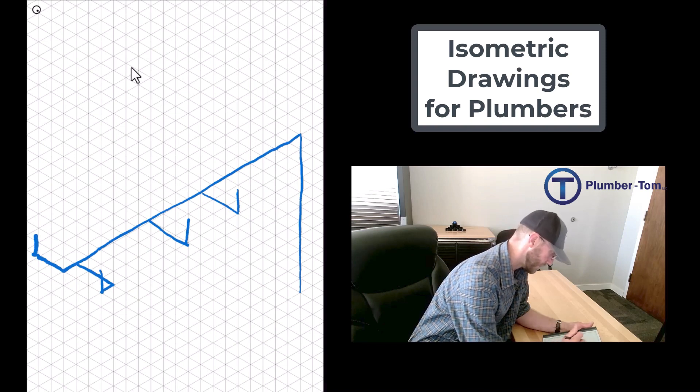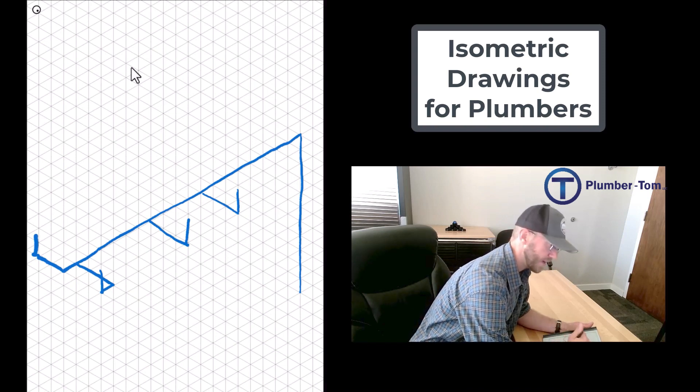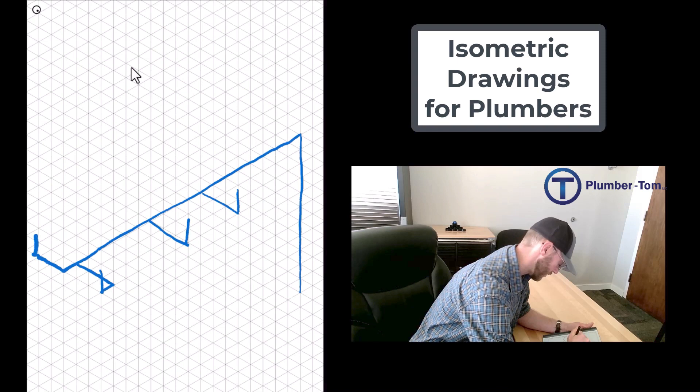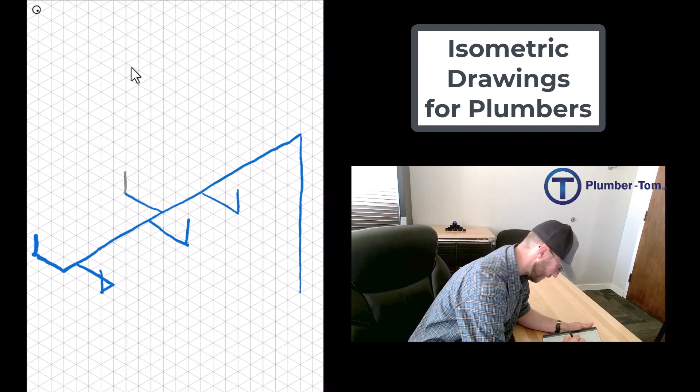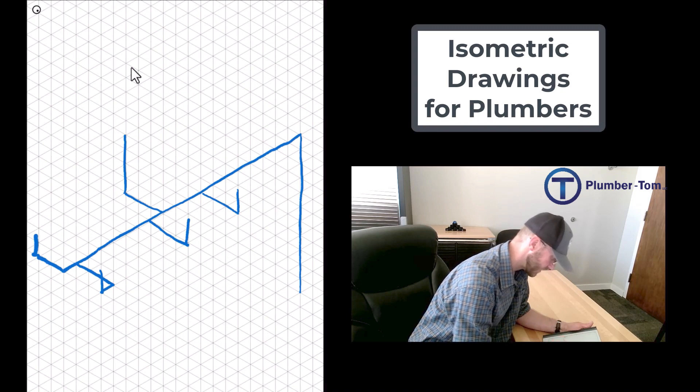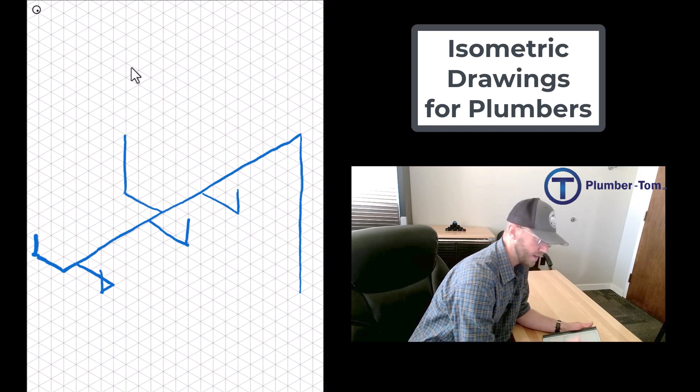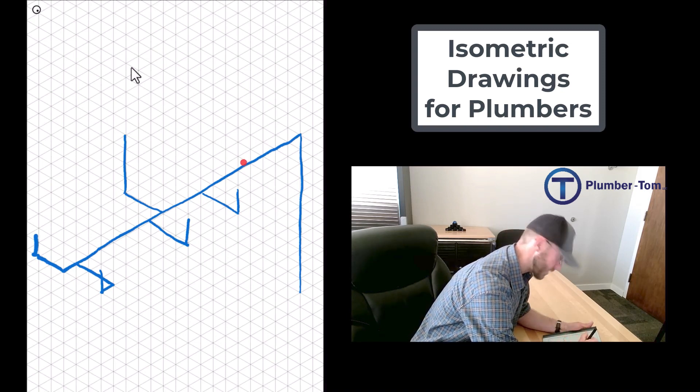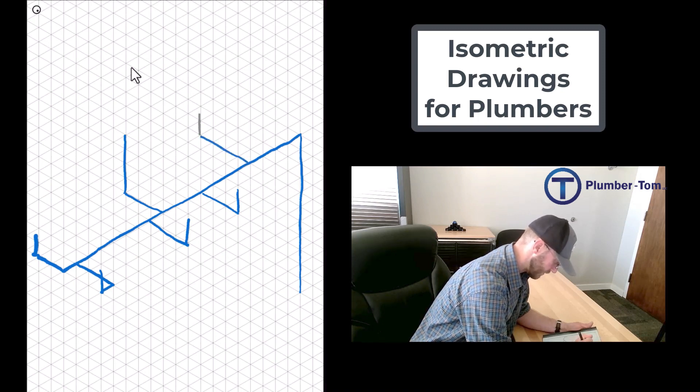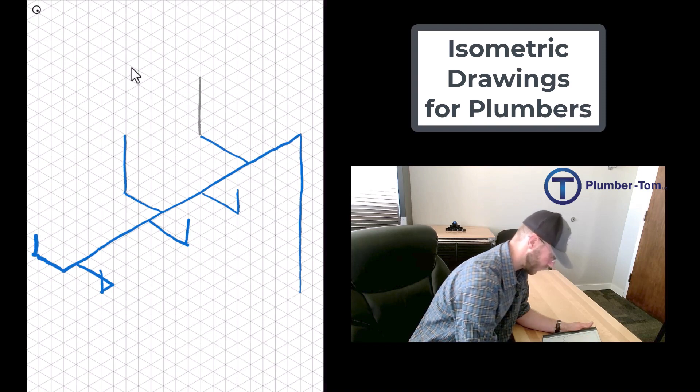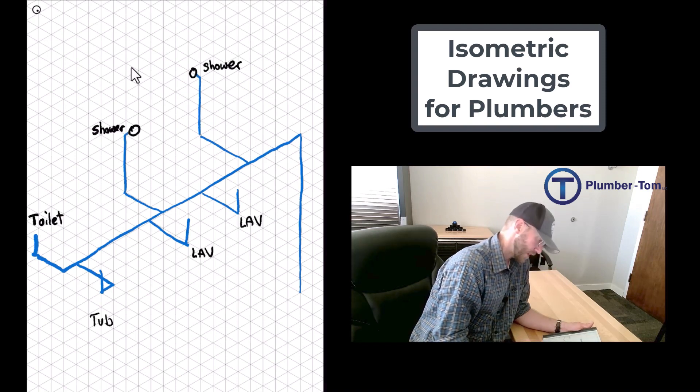Then I need to branch off and come over for the shower. Now again, going from the inside of the shower, my cold needs to be on the right side. I'm going to come up about four feet, trying to scale this a little bit. And then there's the other shower. The other shower branches off a ways back and comes up into the wall at about four feet.